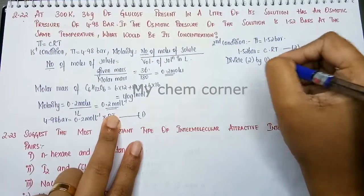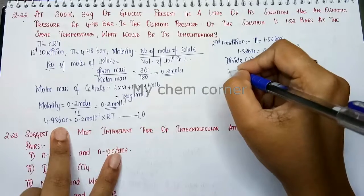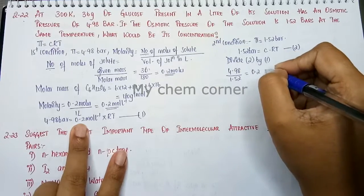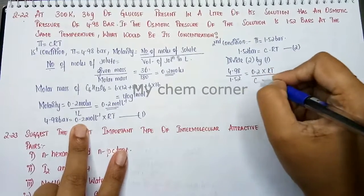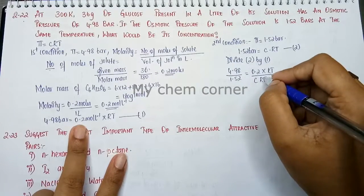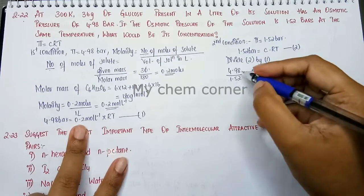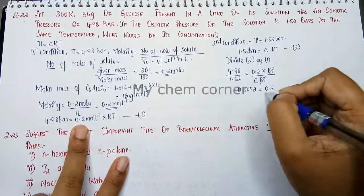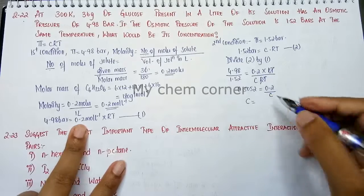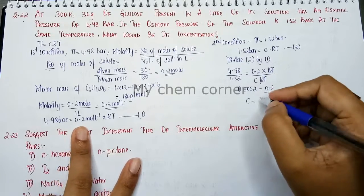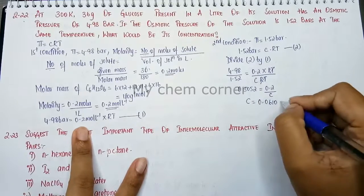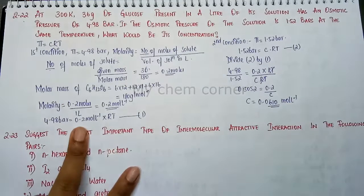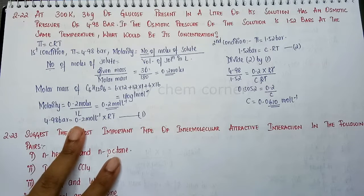Dividing equation 1 by equation 2: 4.98 divided by 1.52 equals 0.2RT divided by C×RT. The RT terms cancel. On the left-hand side we get 3.2763, which equals 0.2 divided by C. Solving for C gives 0.0610 moles per liter, which is the concentration corresponding to the second osmotic pressure of 1.52 bar.